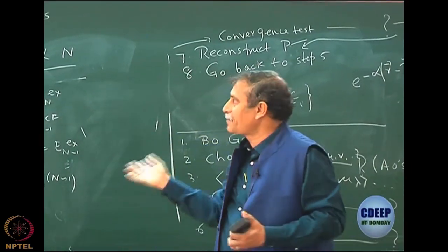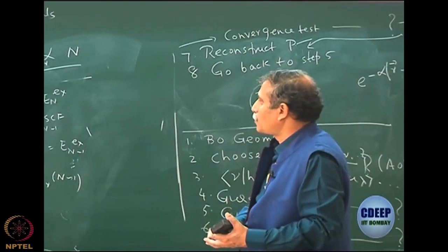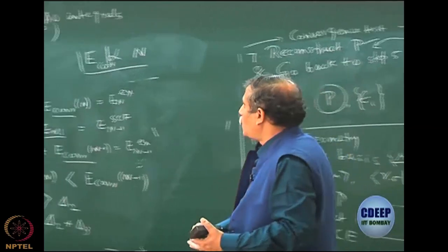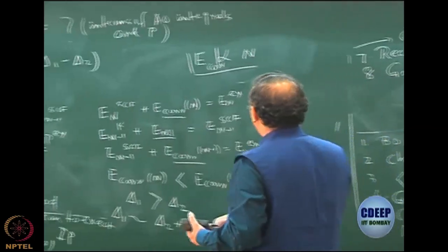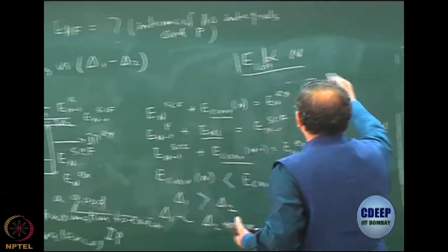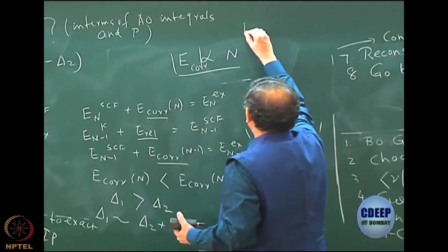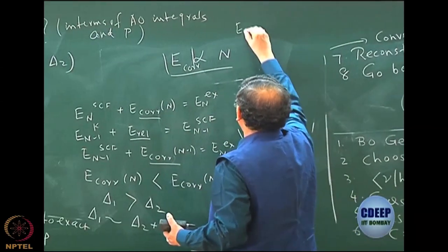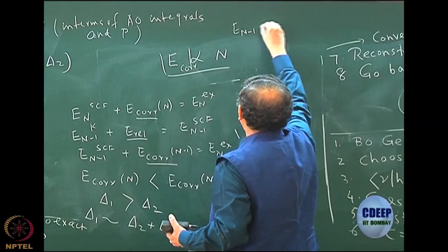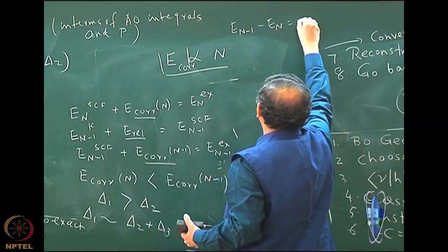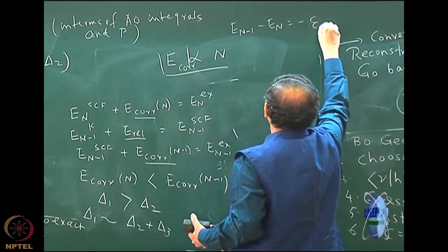So this is something I just wanted to tell. I do not know if I had derived the E_{N-1} minus E_N as epsilon_i. I will close here.